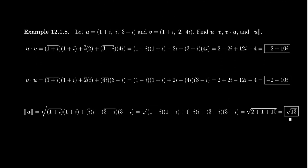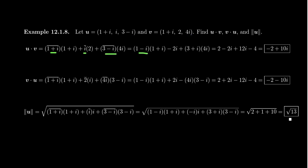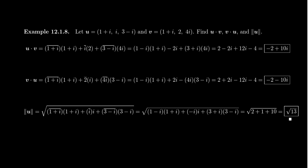For some vectors in C³, take U = (1+i, i, 3−i) and V = (1+i, 2, 4i). The Hermitian product u·v means we take the product of corresponding entries, taking the conjugate of the first vector's entries. So we get (1−i)(1+i) + (−i)(2) + (3+i)(4i). Simplifying — conjugate just switches the sign of the imaginary part — and multiplying out by the usual rules of complex arithmetic, you end up with −2 + 10i. Pause the video to verify the details.